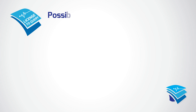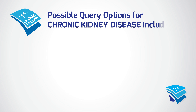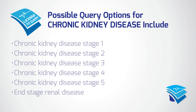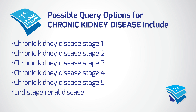Possible query options for chronic kidney disease include chronic kidney disease stage one, stage two, stage three, stage four, stage five, and end-stage renal disease.